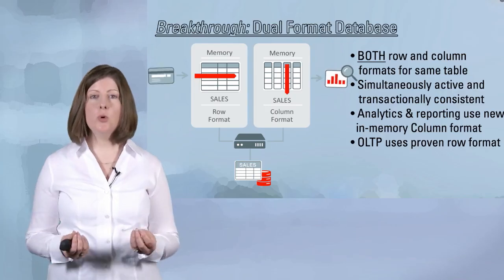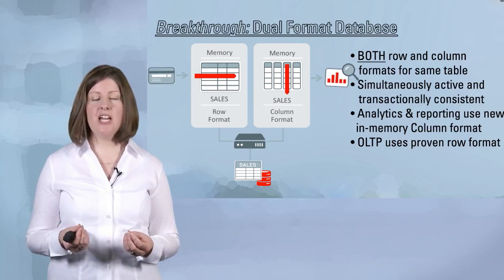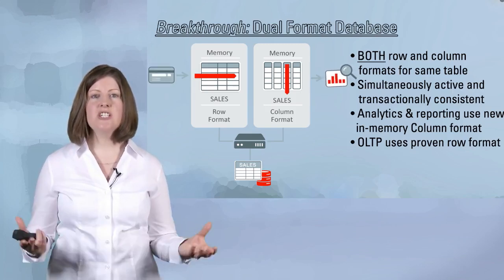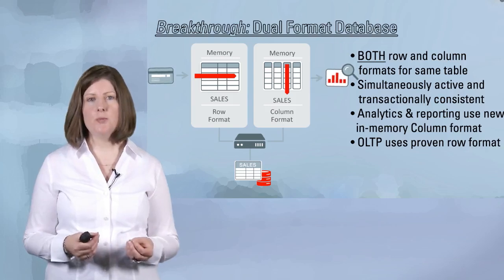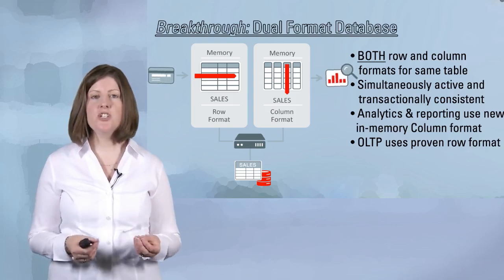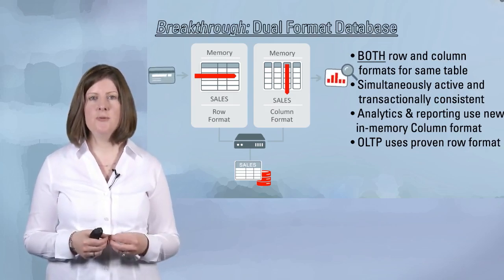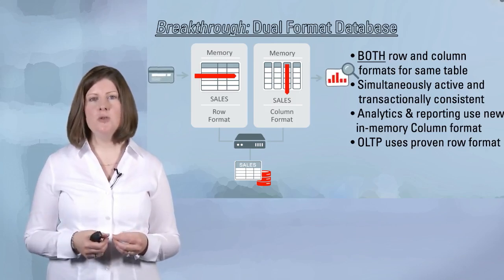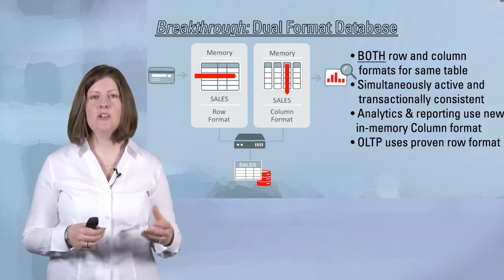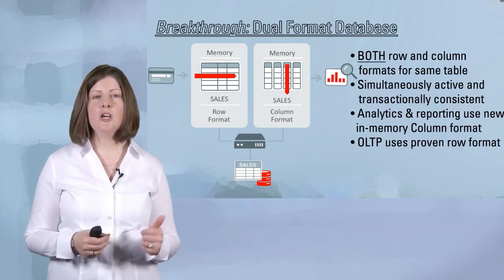What types of queries would those be? They're typically analytical-style queries, queries that are going to scan a lot of data, apply some where clause predicates or filters to that data, and return a subset of rows. The Oracle Optimizer is fully aware of this new in-memory column store and will automatically direct the queries that will benefit from it to the column store.